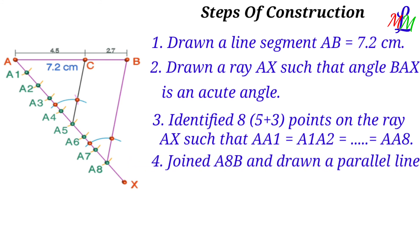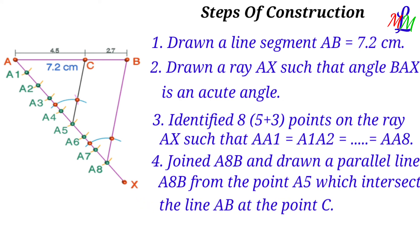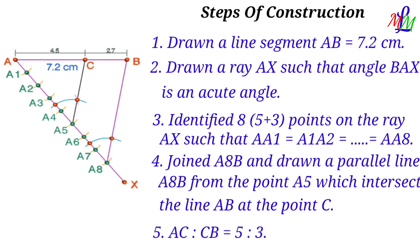Step 4: Join A8B and draw a parallel line to A8B from the point A5, which intersects line AB at the point C. Thus AB is divided into two parts AC and CB, where AC to CB equals 5 is to 3.